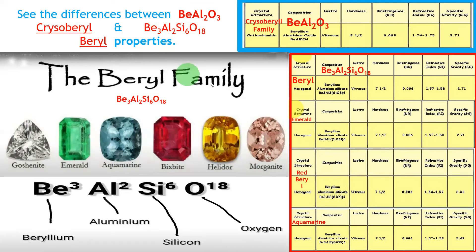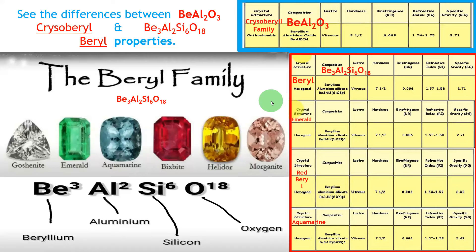In the beryl family, we learn goshenite, emerald, aquamarine, bixbite, heliodor, and morganite. Everything. These two tables you are now familiar with, so we are moving to the next one.